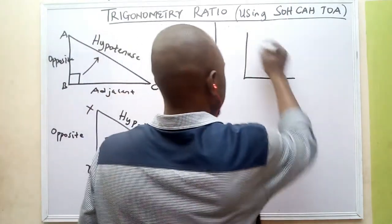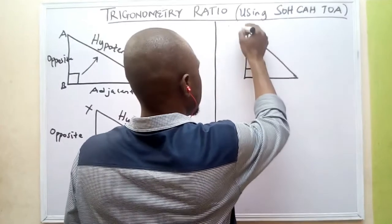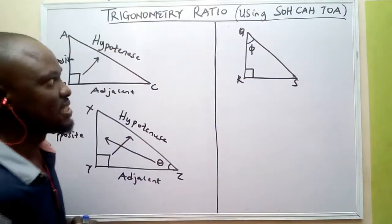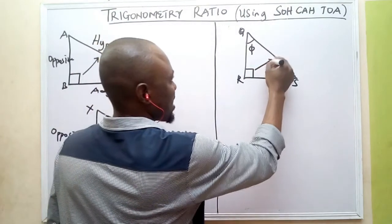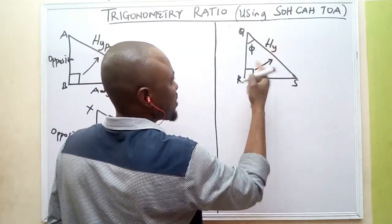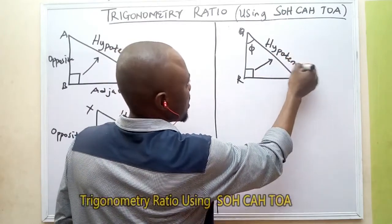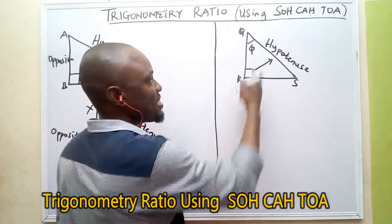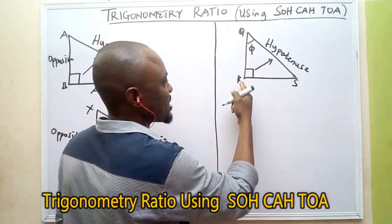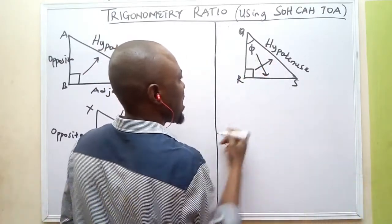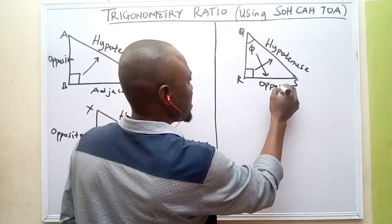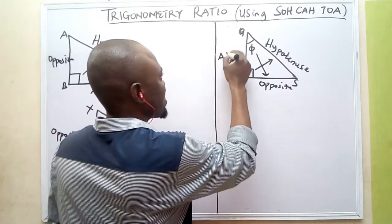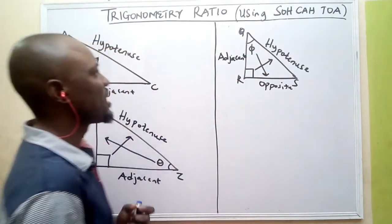Here is another triangle QRS, with an angle phi. The hypotenuse side is always the longest side, which is QS — the side facing the right angle. The side facing angle phi is RS, so RS is the opposite side to phi. QR is the adjacent side.